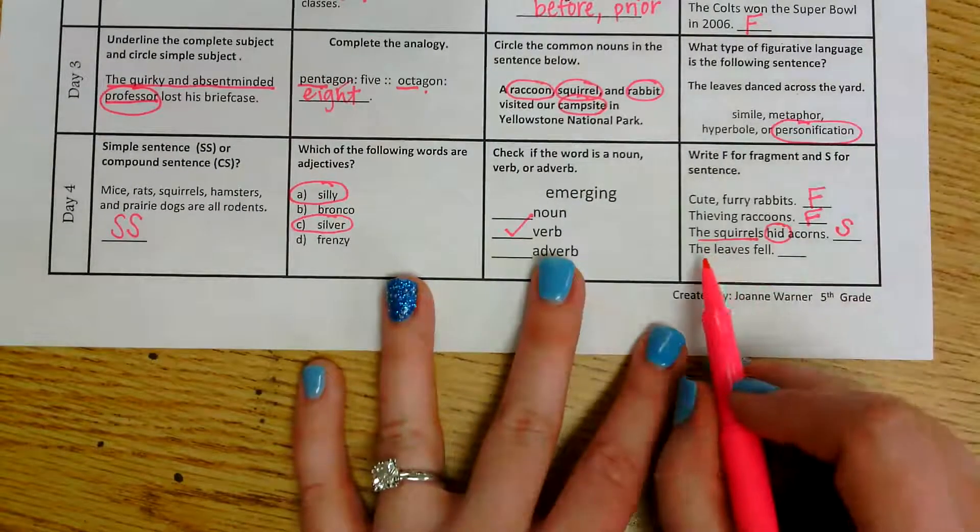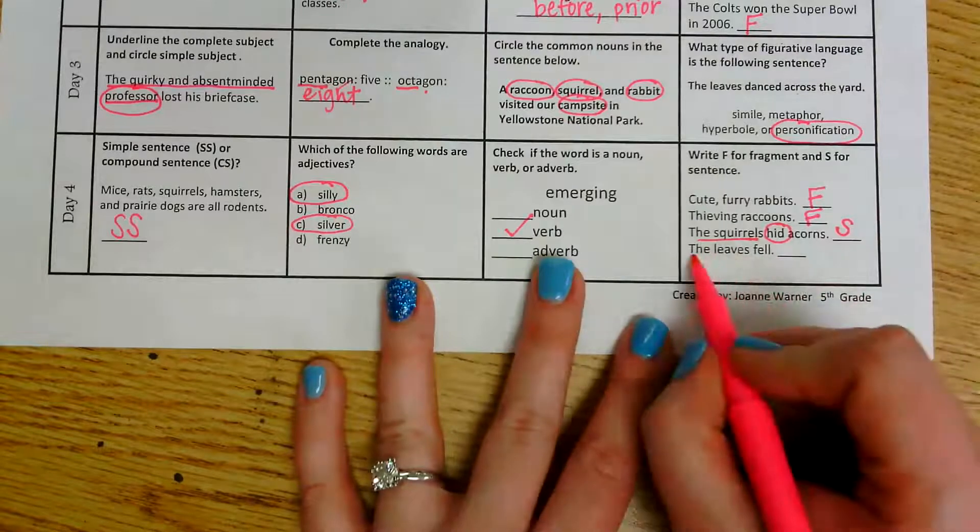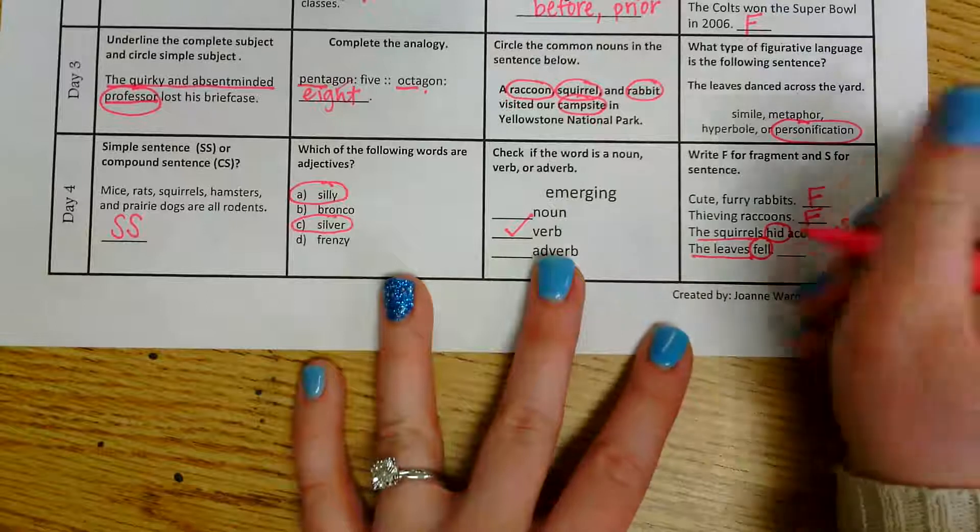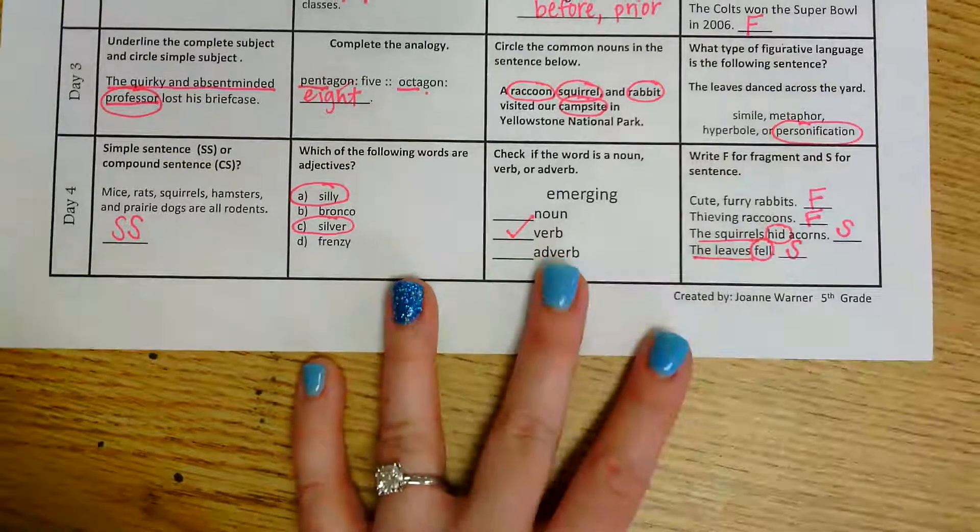And then the last one, the leaves fell. Well, I have the leaves as my subject. Fell would be my predicate because it tells me what the leaves did. So this one is an example of a sentence.